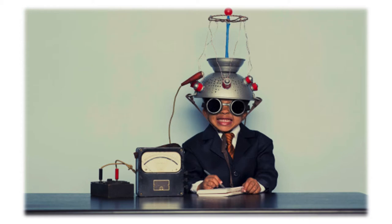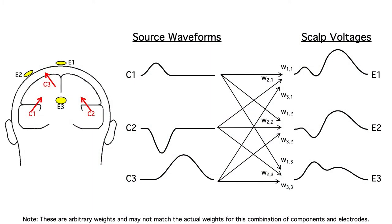That almost never leads to conclusive findings. Remember how all the different underlying components mix together at each electrode site? If you don't specifically design the experiment to isolate the component of interest, you probably won't have a very solid conclusion. You'll see differences in the ERPs between the conditions, but you won't know what they mean.